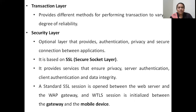The wireless network contains a security layer which is optional. The job of this security layer is to provide authentication, privacy, and secure connections between applications. The security layer is based on the secure socket layer. It provides services which ensure the privacy of data for the user. It performs both server authentication and client authentication — checking whether they are valid clients and valid servers based on username and password credentials. It also provides data integrity services, meaning the data is not changed or seen by any unauthorized users during transmission.